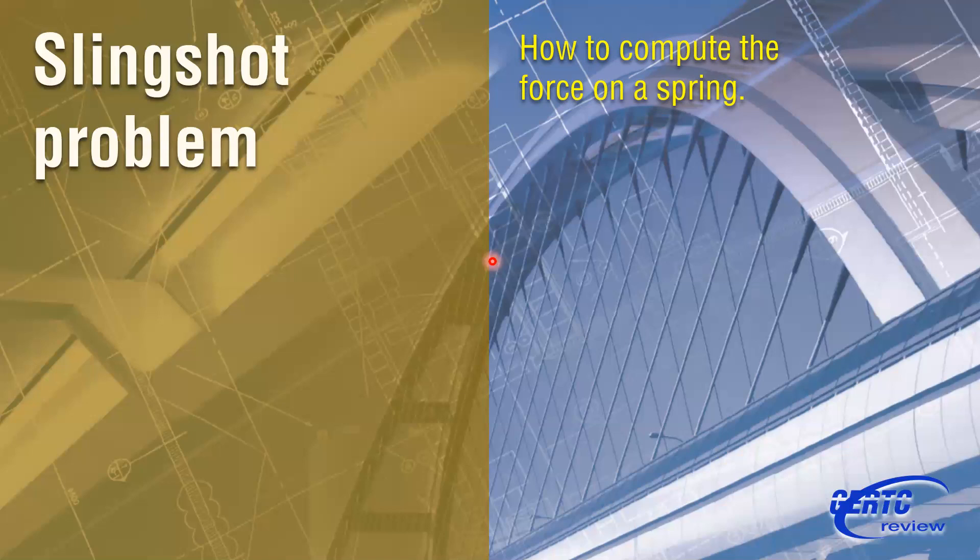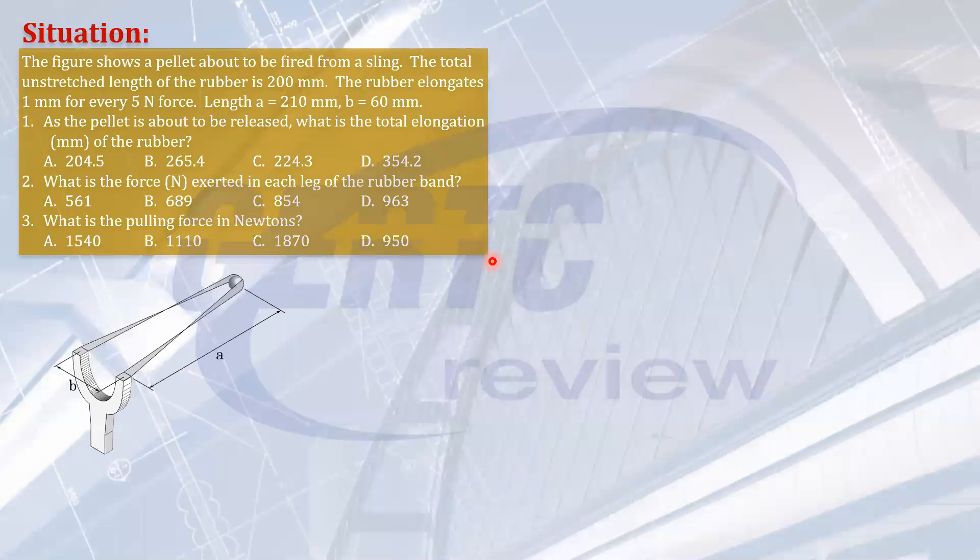We have here the problem. The figure shows a pellet about to be fired on a sling. The total unstretched length of the rubber is 200 mm. The rubber elongates 1 mm for every 5 newton of force. The length A here is 210 mm and the width B is 60 mm.